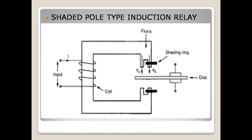The shaded part produces the shaded flux which lags 90 degrees from the unshaded flux. So there are two fluxes—unshaded flux and shaded flux—which have a phase lag between them of approximately 90 degrees.